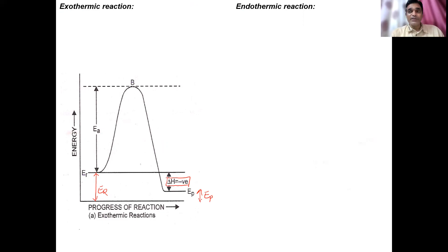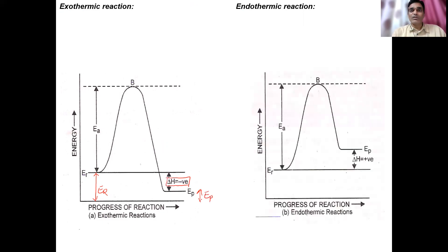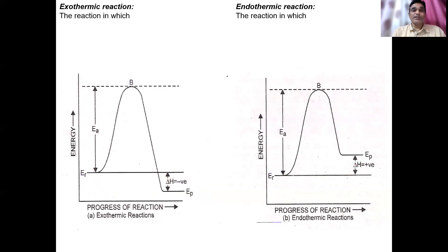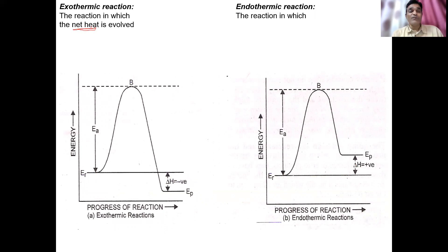One important thing to note: the word 'net' is used deliberately in the definition. In an endothermic reaction diagram, the energy of the product is greater than the energy of the reactant. The definition is: the reaction in which net heat is evolved is called an exothermic reaction. But why 'net'? Because in any chemical reaction — exothermic or endothermic — initially some energy is required from outside to cross the energy barrier.